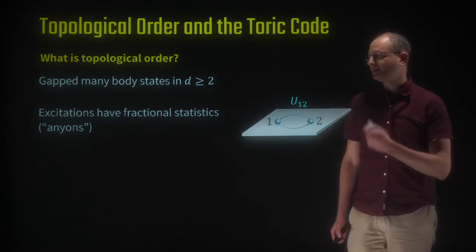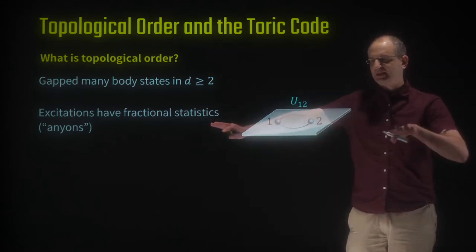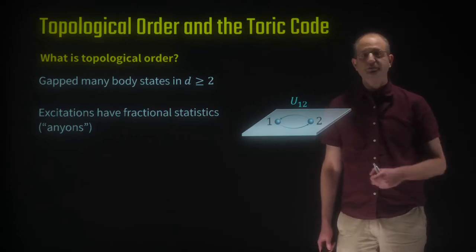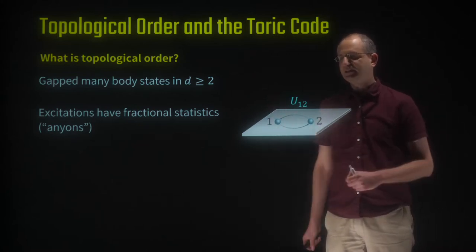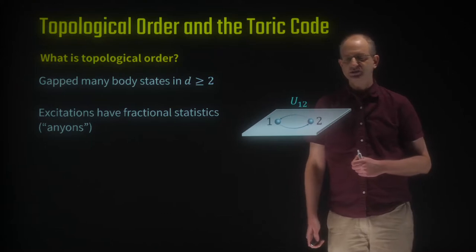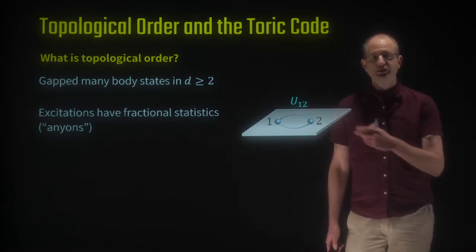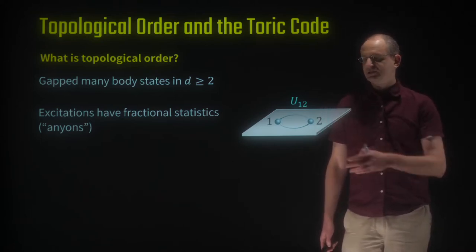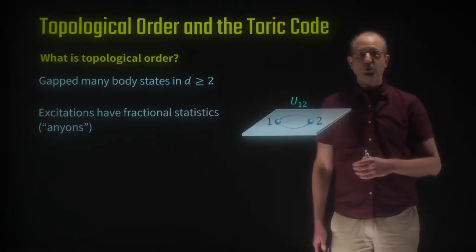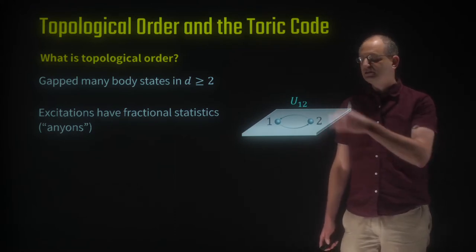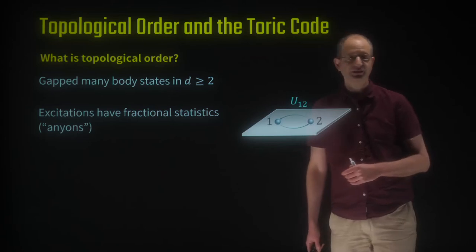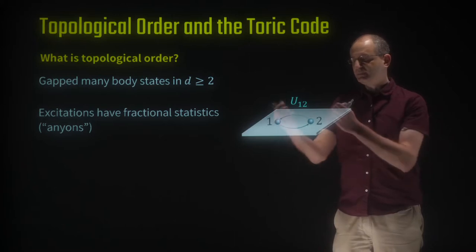One of their defining characteristics is the presence of what we call fractional statistics. We have a 2D gapped system, and we can create excitations on top of this ground state. These excitations are particle-like localized objects — we call them quasi-particles. In quantum mechanics, if you exchange the positions of two identical particles, the state returns to itself up to a phase. What's special about topologically ordered states is that this phase does not have to be 0 or pi, so these excitations can behave neither like fermions nor like bosons. We call such quasi-particles anyons, because they can have any type of fractional statistics. This isn't possible in three spatial dimensions, but it is possible in two spatial dimensions.